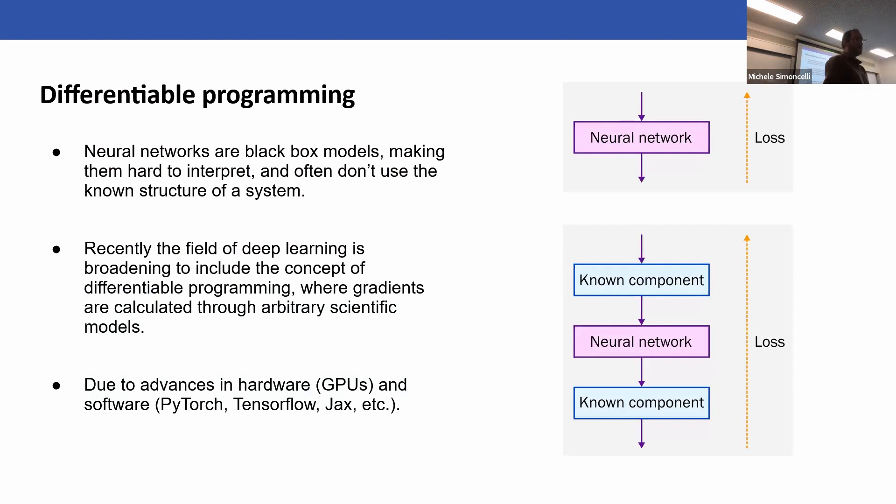More broadly, this links to the concept of differentiable programming. Neural networks are great and used everywhere now, but they're black box models, hard to interpret. In science we often know something about the system. Recently the field of deep learning has broadened to include differentiable programming, where you calculate gradients through arbitrary scientific models. For instance, you might have a differential equation where you know one part and have a neural network for the unknown part. You can link that all together with automatic differentiation frameworks. It's been enabled by advances in hardware, particularly GPUs, and software like PyTorch, JAX, etc.